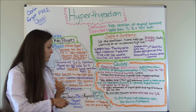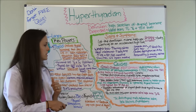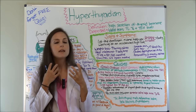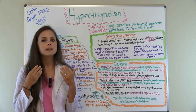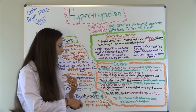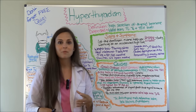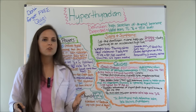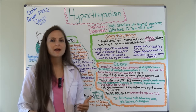Another cause of hyperthyroidism is thyroiditis — inflammation of the thyroid gland. When the thyroid gland becomes inflamed, it causes it to release thyroid hormones into the blood, so you'll have excessive production. Another cause is simply consuming too much iodine — the thyroid loves iodine, so when you take in a lot of iodine, you're going to produce lots of thyroid hormones.